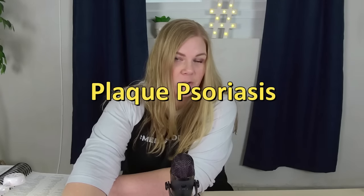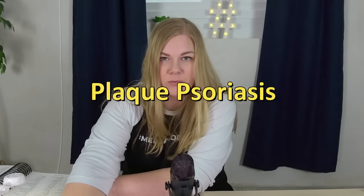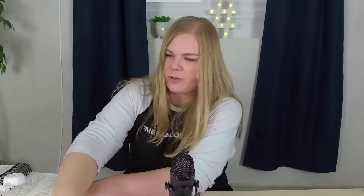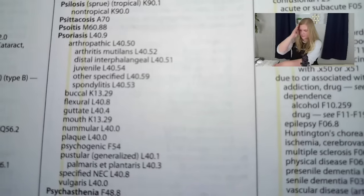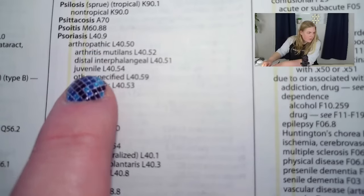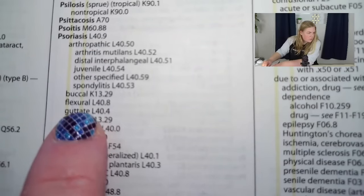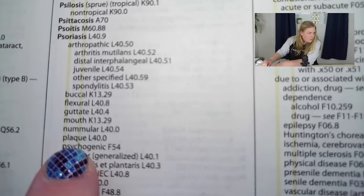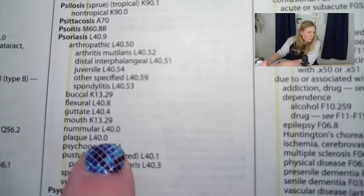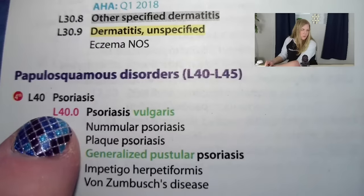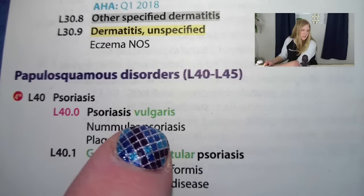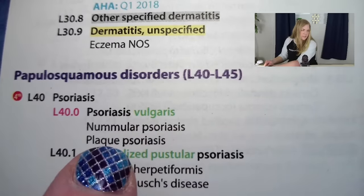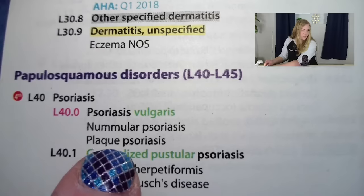Last, let's look up the code for plaque psoriasis. Our main term is psoriasis — that's the condition. Under psoriasis, we have arthropathic, buccal, flexural, guttate, mouth, and then plaque — L40.0. In the tabular list, L40.0 says psoriasis vulgaris, and gives the example of plaque psoriasis. So there you have it.